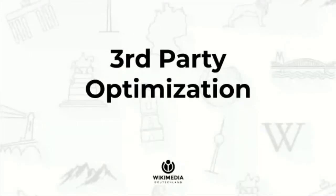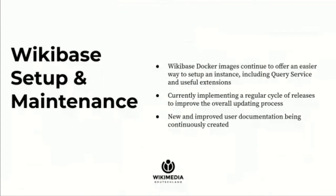Another big area we're putting a lot of effort into is third-party optimization — making it easier for people outside the Wikidata/Wikibase team to set up and use a Wikibase instance. Specifically, we've been improving the setup and maintenance process by providing Docker images for easy installation. We're working on setting up predictable and regular release cycles, and we've been working on — and will continue to work on — documenting things to make it easier to set up and maintain a Wikibase instance.